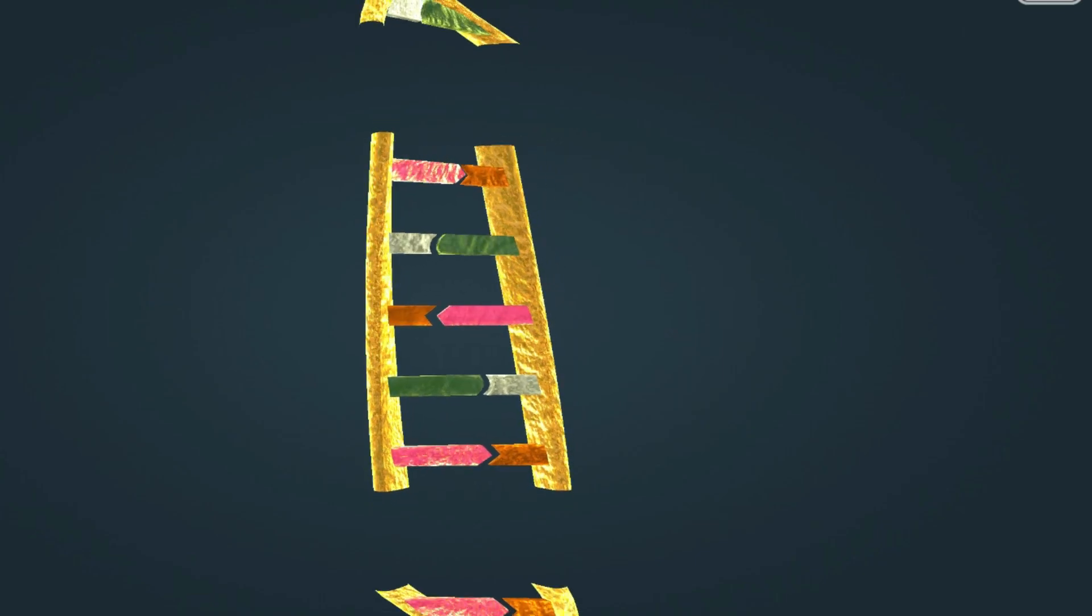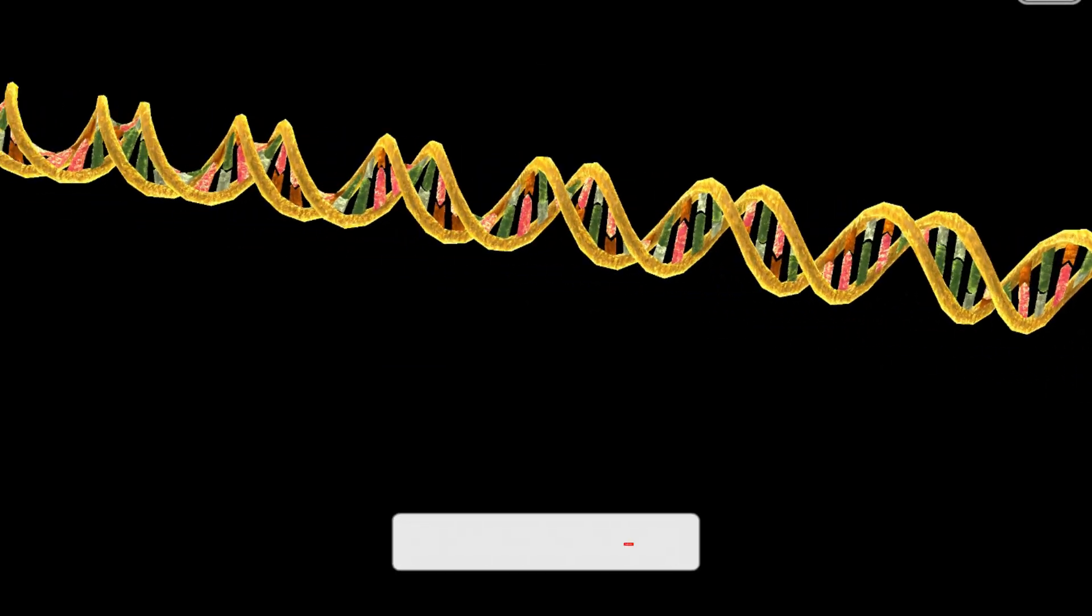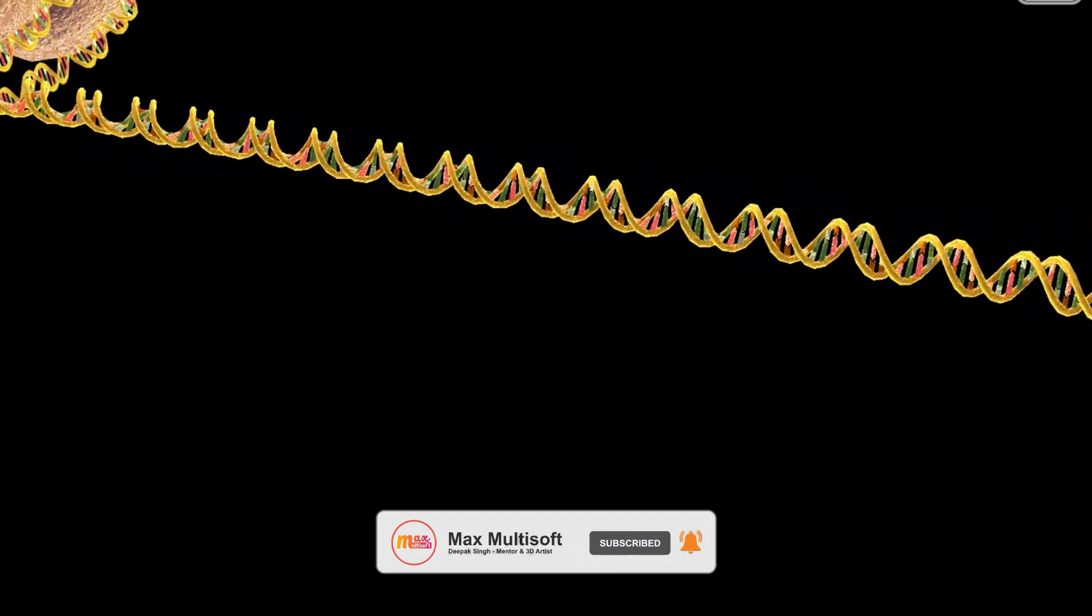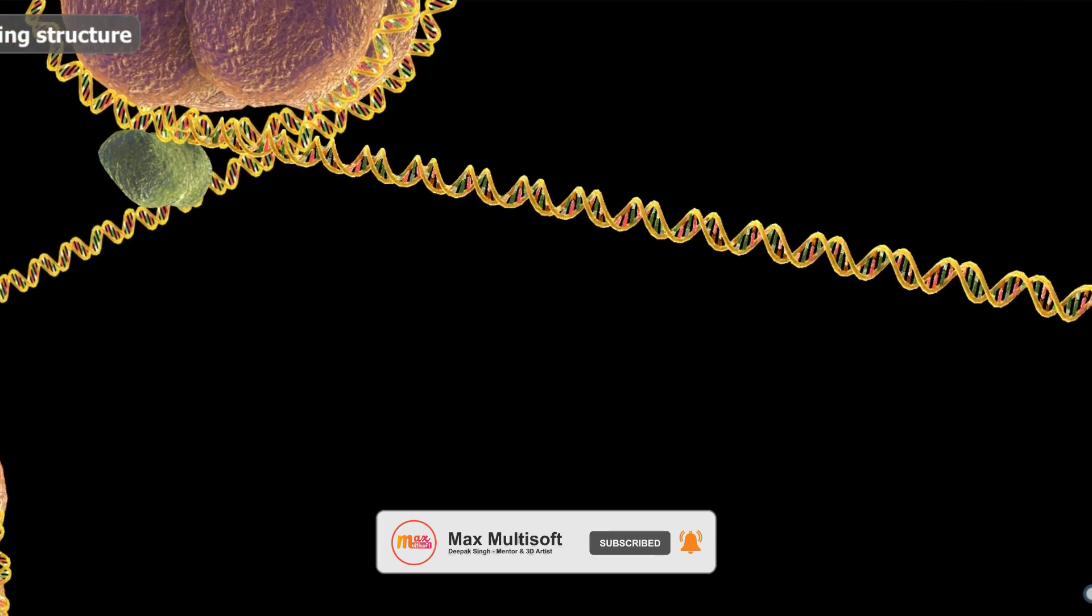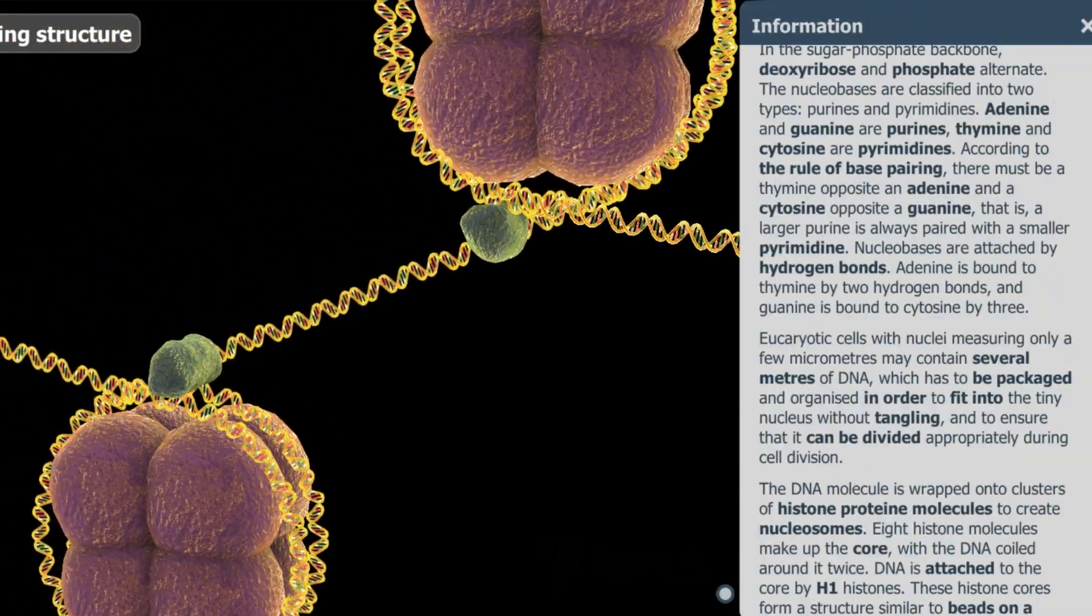Eukaryotic cells with nuclei measuring only a few micrometers may contain several meters of DNA, which has to be packaged and organized in order to fit into the tiny nucleus without tangling, and to ensure that it can be divided appropriately during cell division.